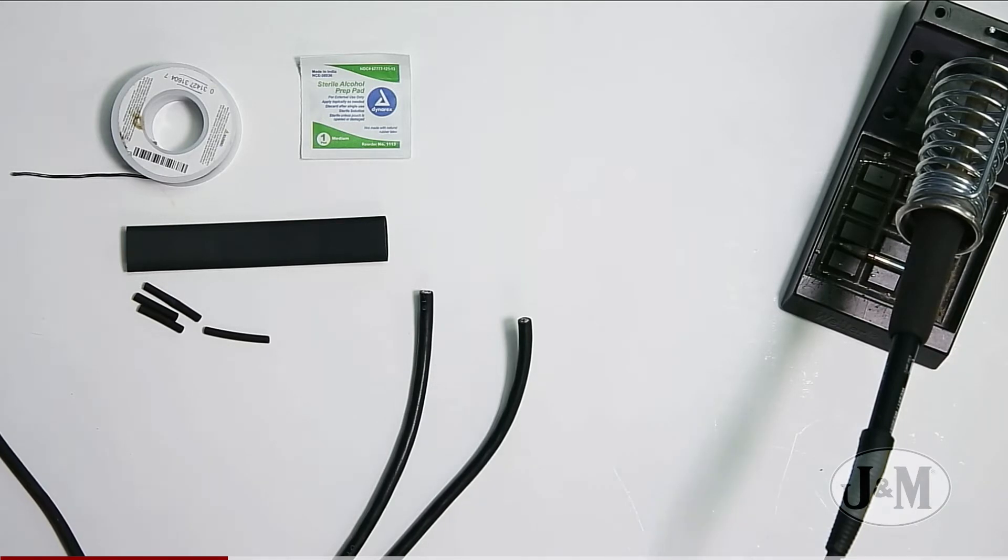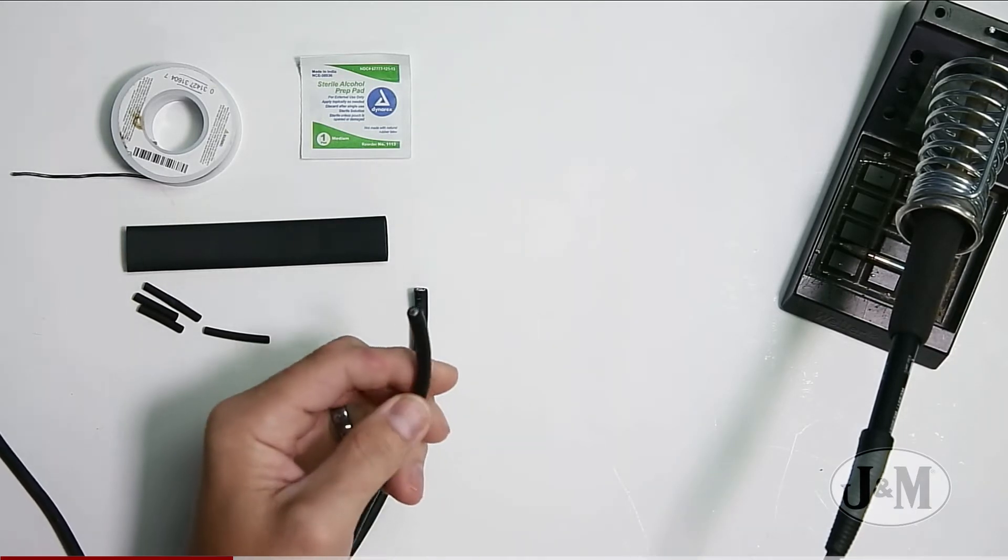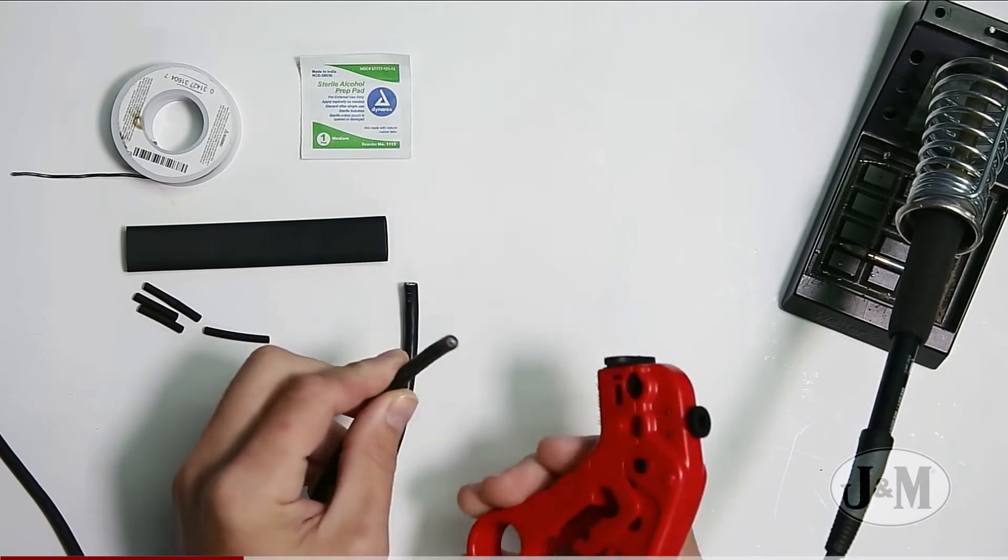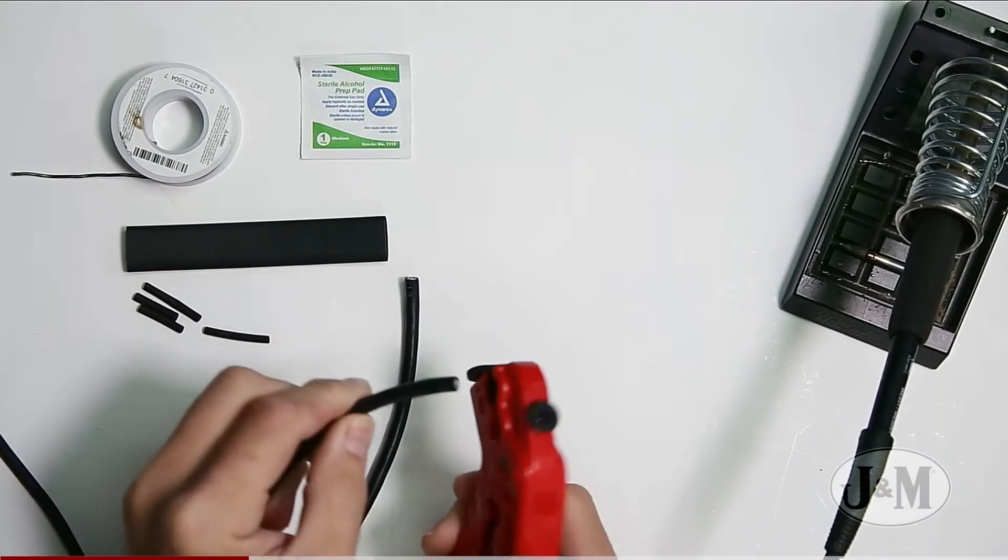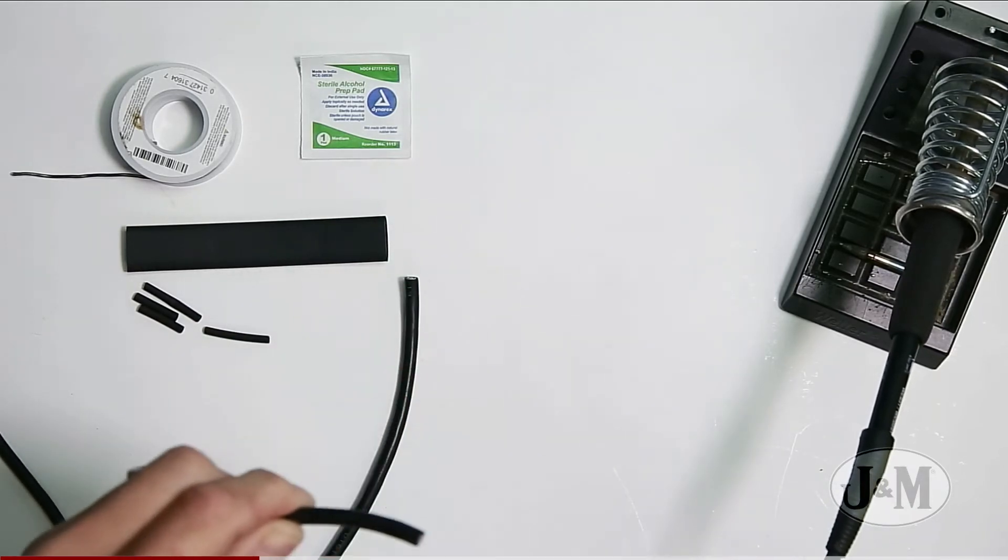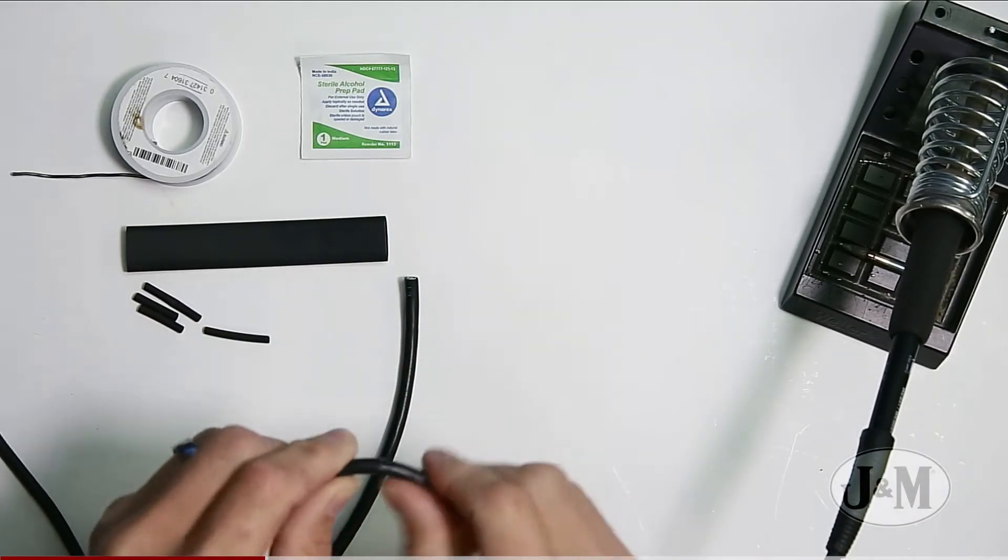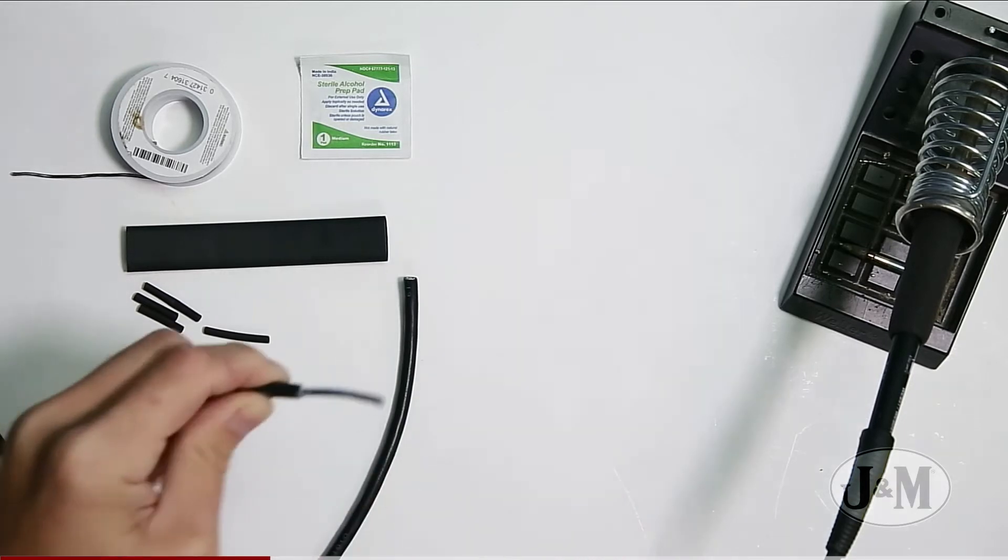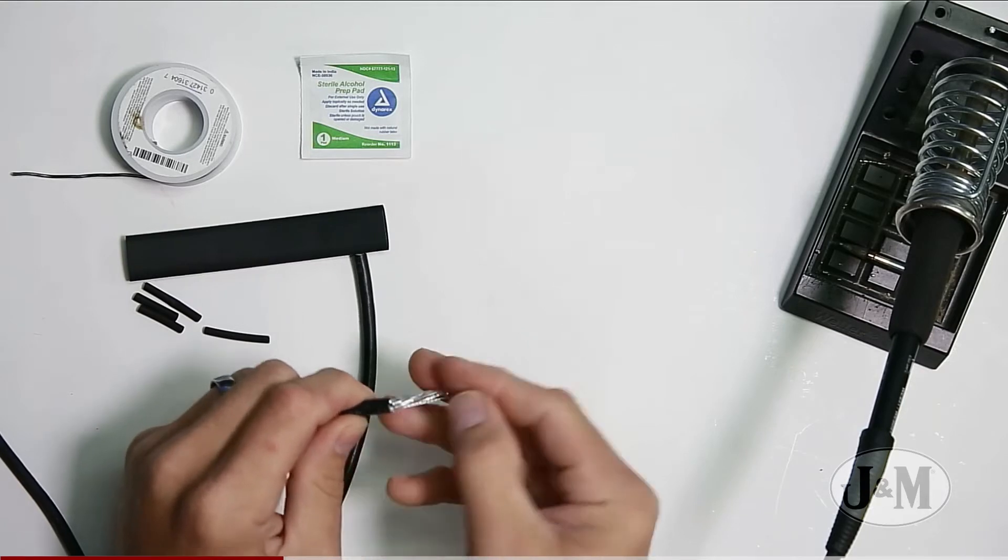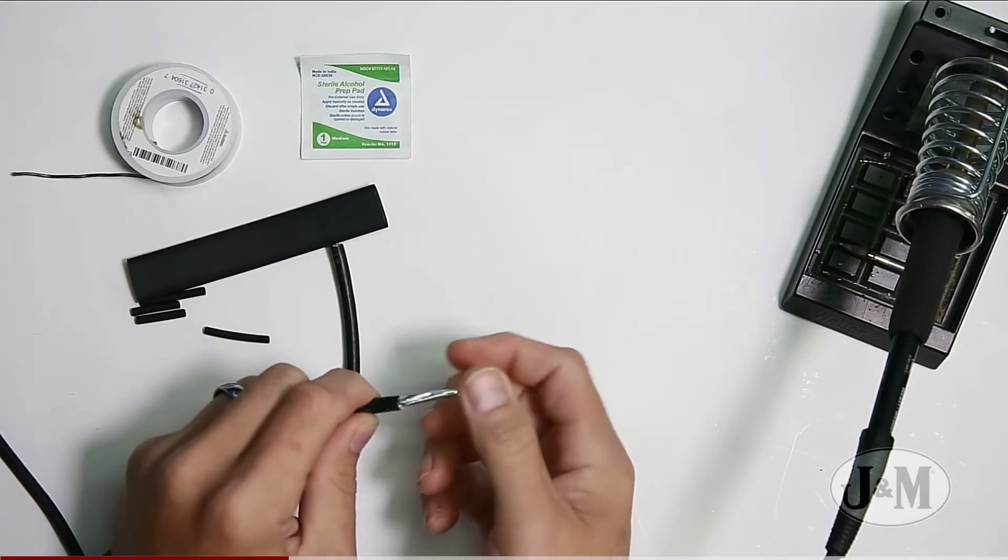So the first thing we are going to do is we are going to trim back the tips of the ends. So this was the bad section I cut out. We are going to strip this back about an inch. Just break it and pull it. You can do this also with a utility knife. Just make sure you don't score too deep so that you don't cut into the actual insulation underneath there.